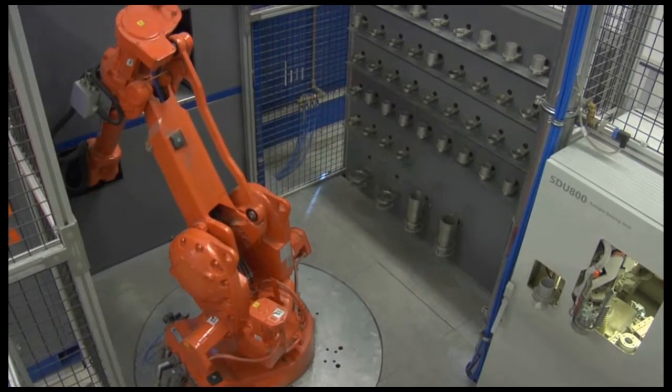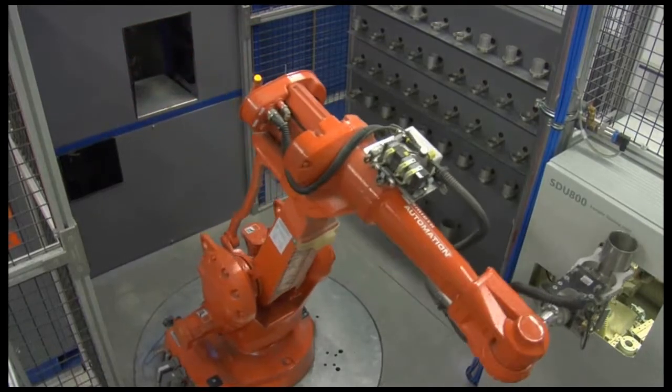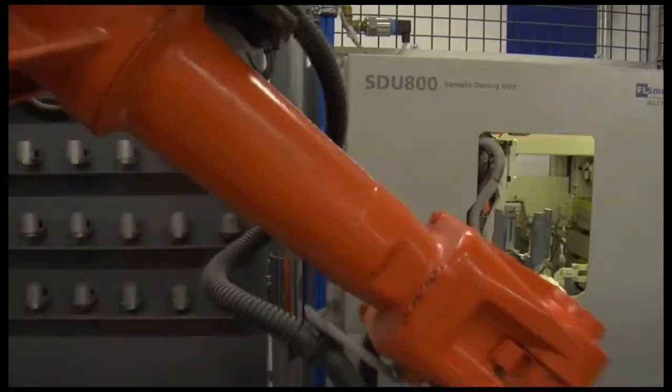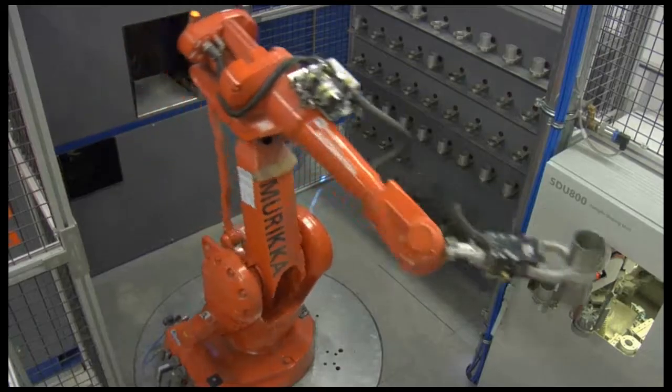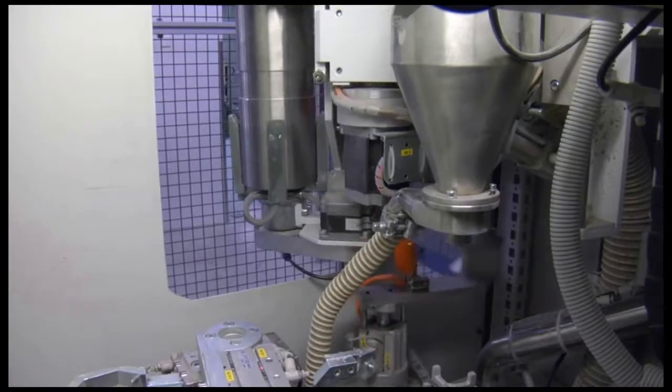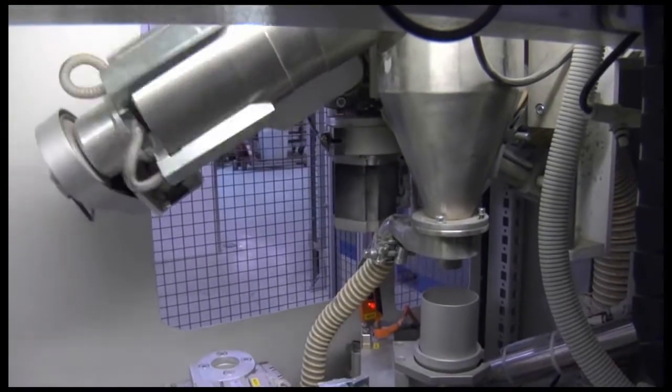The sample portion coming from the pulverizing cell is split into a large cup in the sample dosing cell. The dosing cell consists of one sample dosing unit and one fire assay doser. First, the sample goes to the sample dosing unit, where it is dosed into several sub-samples. One for further processing in the fire assay doser.